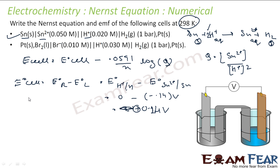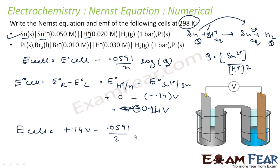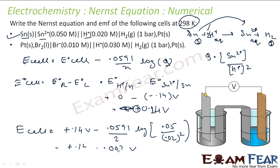Now plugging the values: E_cell = +0.14 V − (0.0591/2) × log([Sn²⁺]/[H⁺]²). With [Sn²⁺] = 0.05 and [H⁺] = 0.02, we get E_cell = +0.14 V − 0.002 V, which gives approximately +0.14 V after solving.